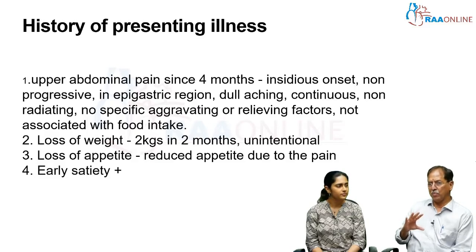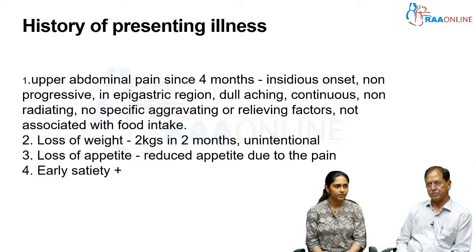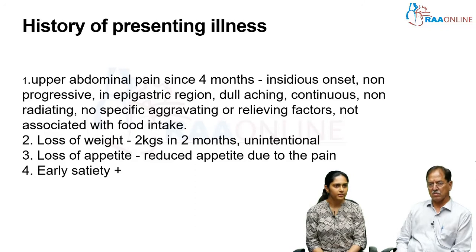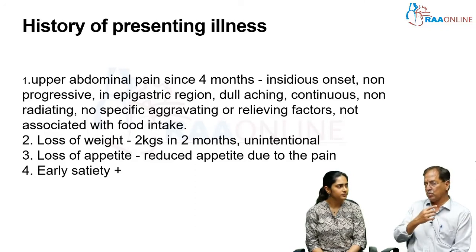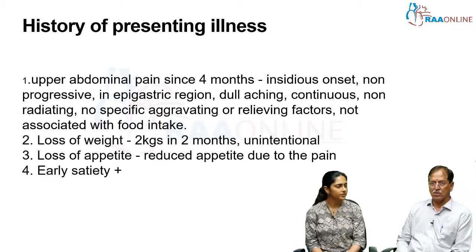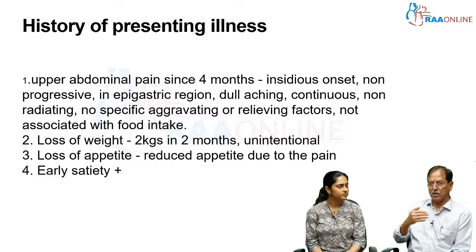For upper abdominal pain of 4 months in a 50-year-old female, the differential diagnosis would include gastric or duodenal ulcer — peptic ulcer disease — and chronic pancreatitis. Acute problems are unlikely given the 4-month duration. You have to think of a chronic problem, so acid peptic disease including duodenal ulcer and gastric ulcer are appropriate considerations.